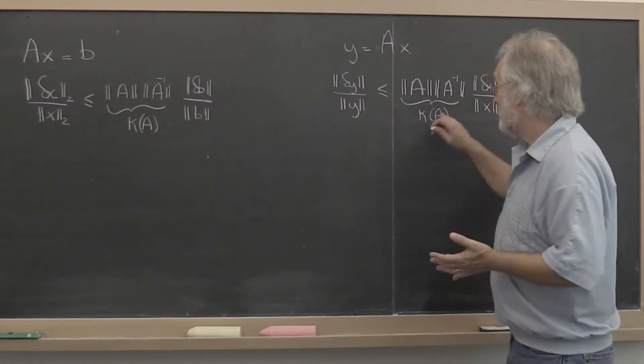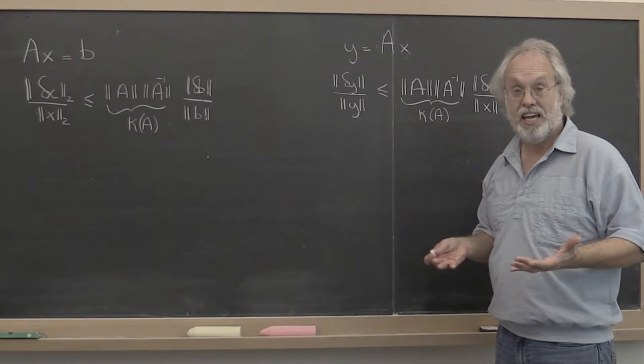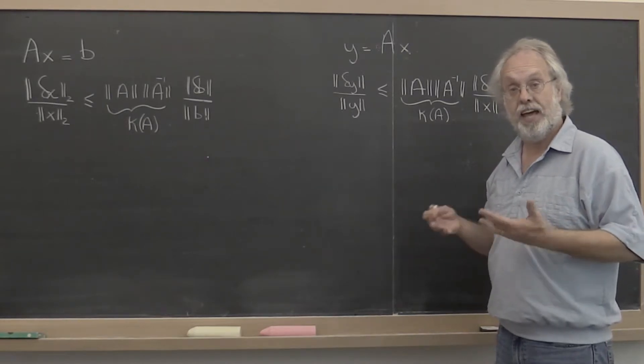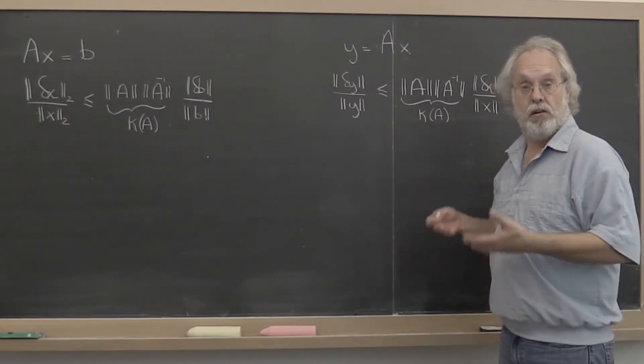Again, the condition number of an arbitrary matrix A could be pretty bad. If A is almost singular, then it would be bad.